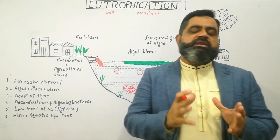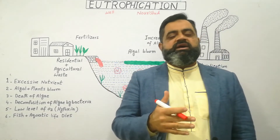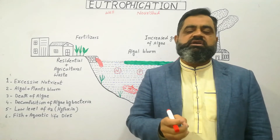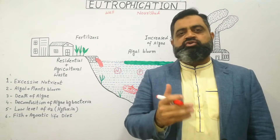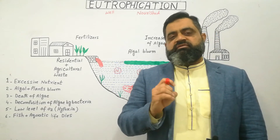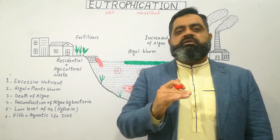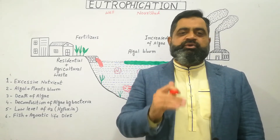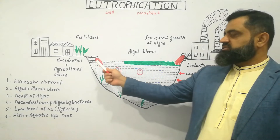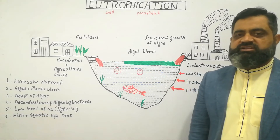How does this happen? There are three main causes of eutrophication. Number one: agriculture. We use many types of fertilizers — nitrogen fertilizers and phosphate fertilizers — in our agriculture industry. Though the agriculture industry is very vital for our survival, after rain, water washes away these phosphates and nitrates from the fields, and these important nutrients ultimately reach into the water body, such as a lake.